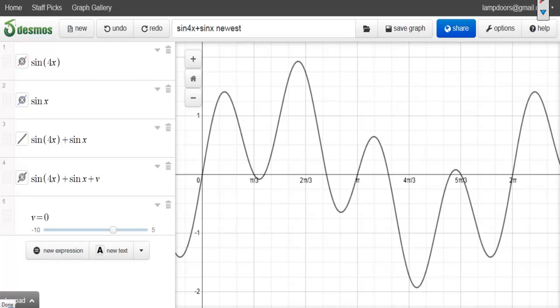So I used Desmos.com to figure out what the graph of sine 4x plus sine x is. And the key to the problem is realizing that sine x can be your vertical shift to sine 4x.